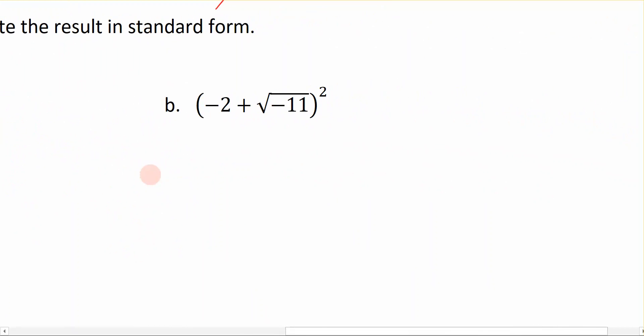Let's look at this next example. We have negative 2 plus the square root of negative 11, and all of that is squared. I am going to start by expressing this portion in terms of i. So I have negative 2 plus i times the square root of 11, and that whole thing is going to be squared.